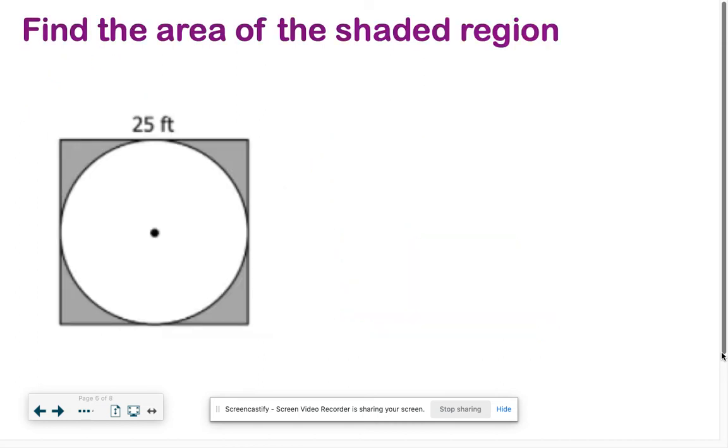Find the area of the shaded region. We call these composite figures. It's just like a bunch of things happening at once. You find the area of the shapes and either subtract or add them together. In this example here, we have a square and a circle. Let's find the area of the square first. Area of the square is length times width, so 25 times 25. That's 625.